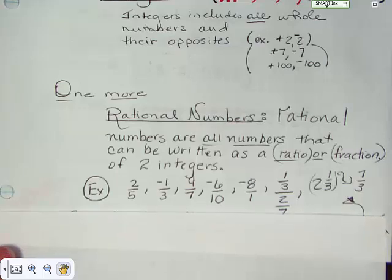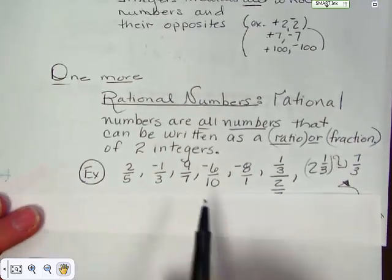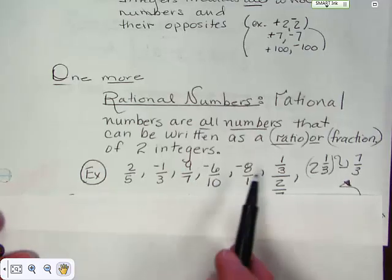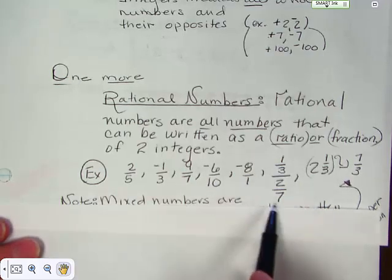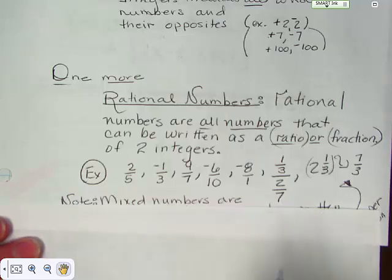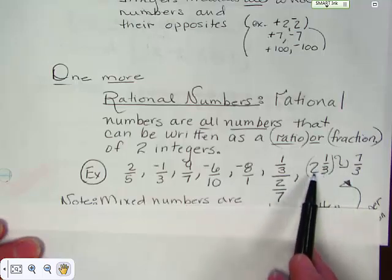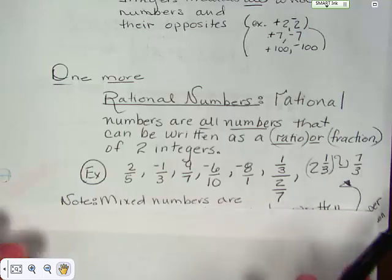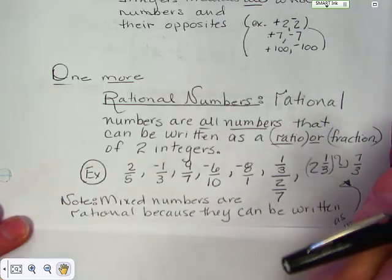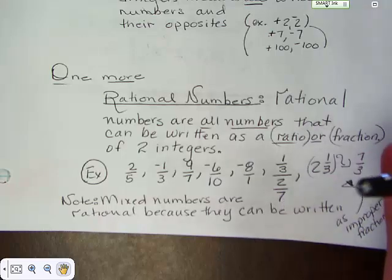Here's a really good list of rational numbers: two-fifths, negative one-third, nine over seven, negative six over ten, negative eight over one, and this complex fraction — one-third over two-sevenths. Two and one-third can be turned into seven-thirds, and therefore all mixed numbers are rational because they can be written as improper fractions.